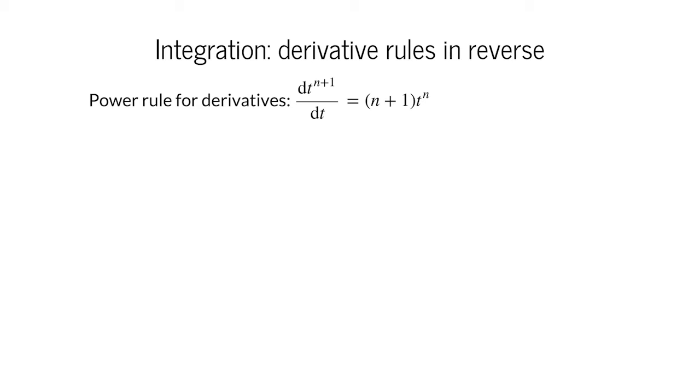One of the first rules you learn for differentiation is the power rule, so that you can differentiate functions like t squared, t to the fifth, etc. Here we write the power rule for differentiation slightly differently, where we have t to the power of n plus 1. If we differentiate t to the power of n plus 1, the exponent n plus 1 comes down in front, and the exponent decreases to n. The result is n plus 1 times t to the n. We want our result to be just plain old t to the n, so let's divide both sides by n plus 1.